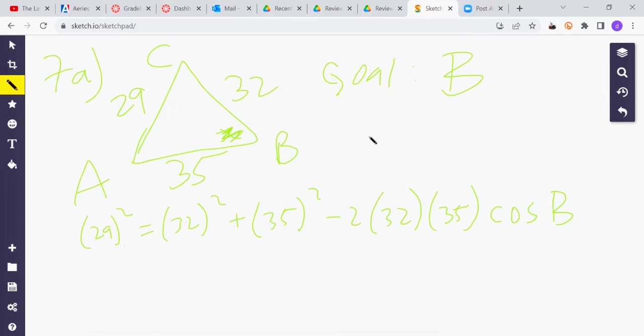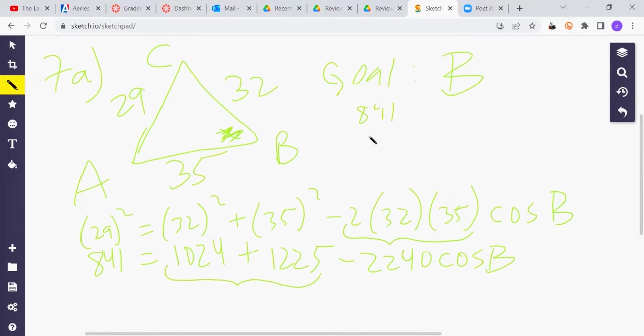Let's see. Get your calculators out. 29 squared is 841 equals 32 squared is 1024. 35 squared is 1225. Minus. Let's go 2 times 32 times 35. And that's 2240 times the cosine of B. Why don't we add those two numbers together? So we have 841 equals 1024 plus 1225. These two together, that's 2249 minus 2240 times the cosine of B.